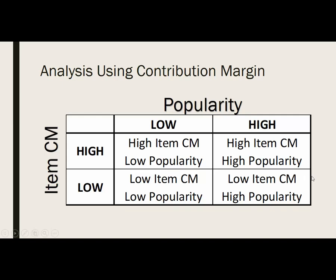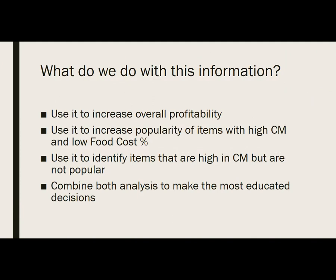Low item contribution margin with high popularity is referred to as a 'plow horse' — it's not making you a lot of money but it's very popular. This is where you need to try and make a bit more money off these items because they're so popular. Again, raising the selling price or reducing costs are your two options, but you have to be careful.